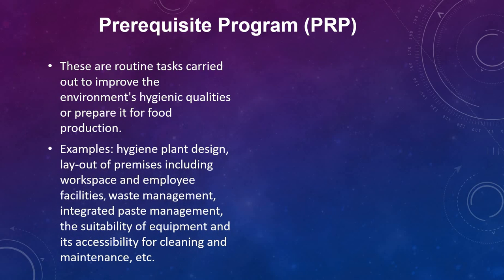For example, the examples we can mention are: hygienic plant design, how the plant is constructed, what is the plant layout, how they control pests, waste management, and how the layout of the premises including workspace and employee facilities is arranged. These are all examples of PRP.